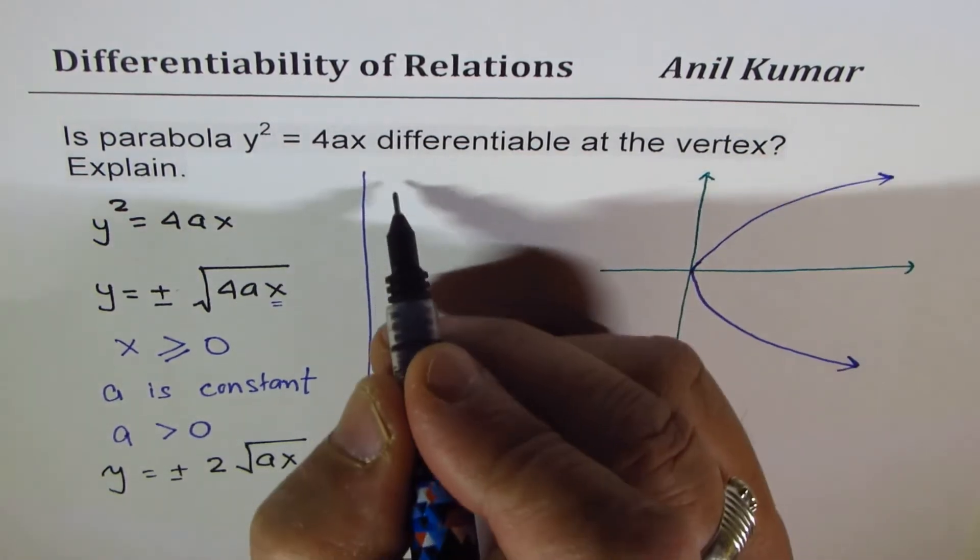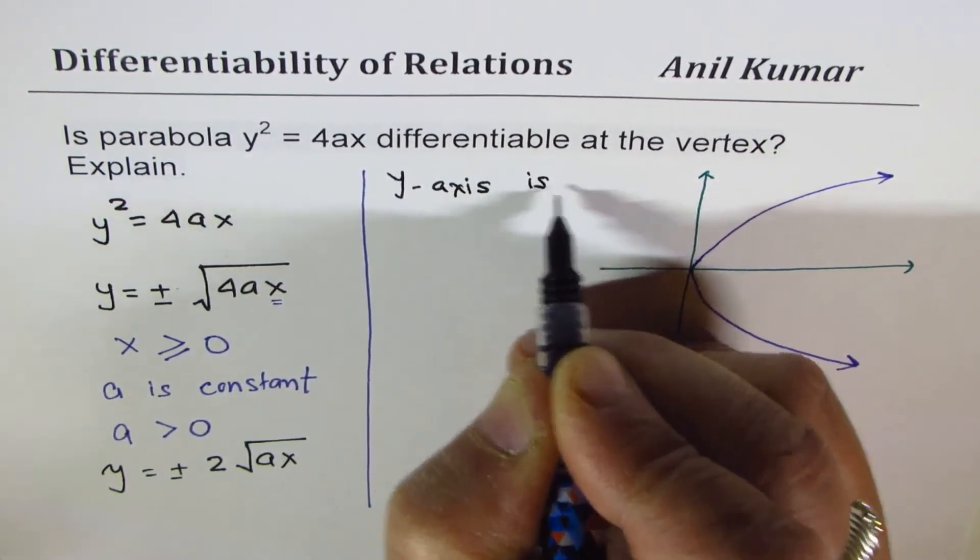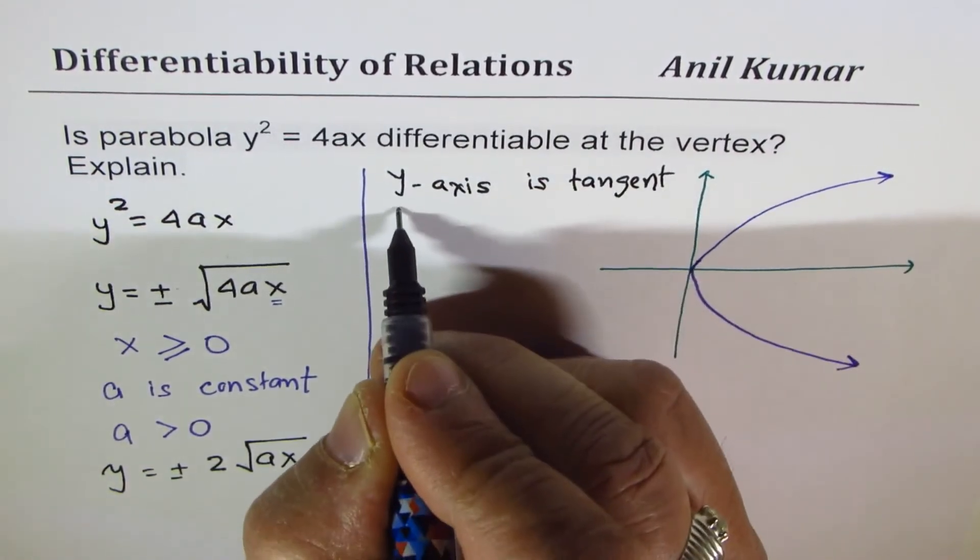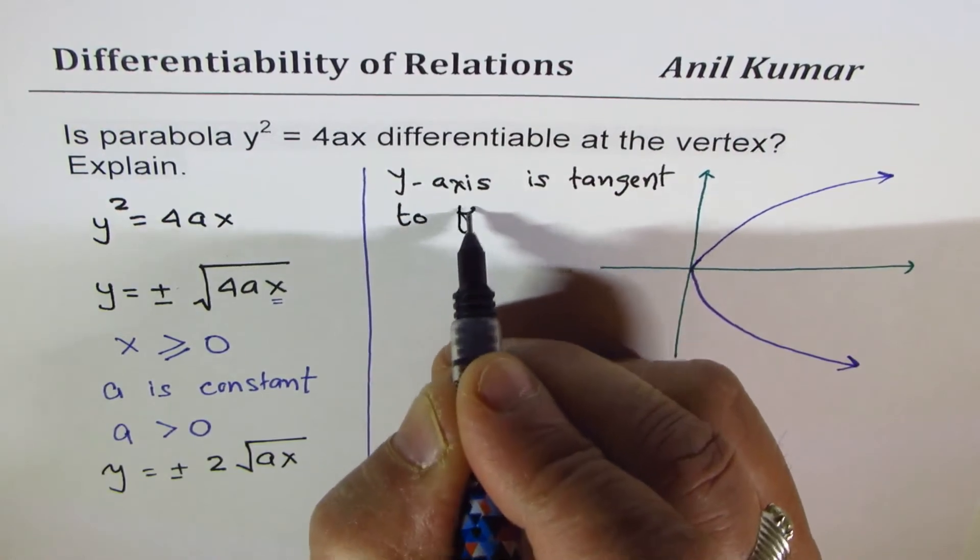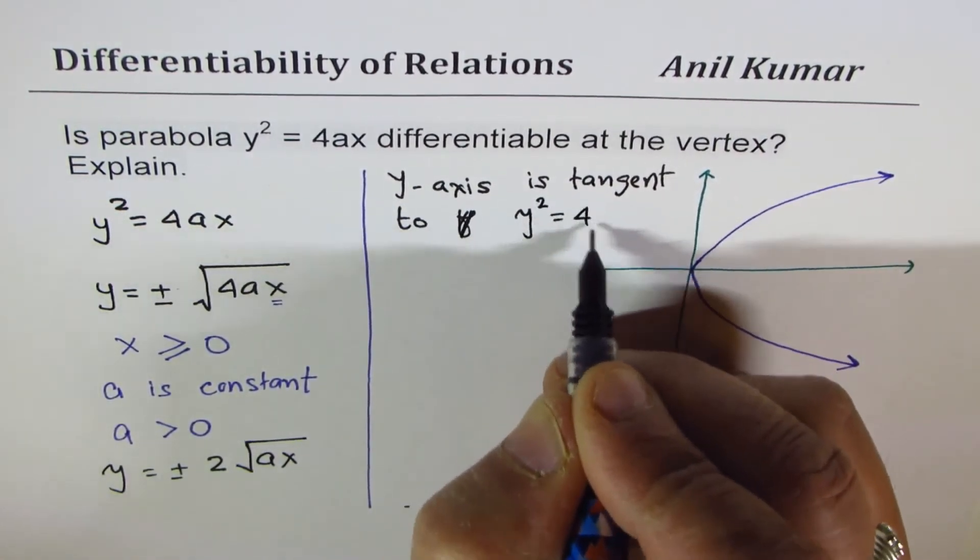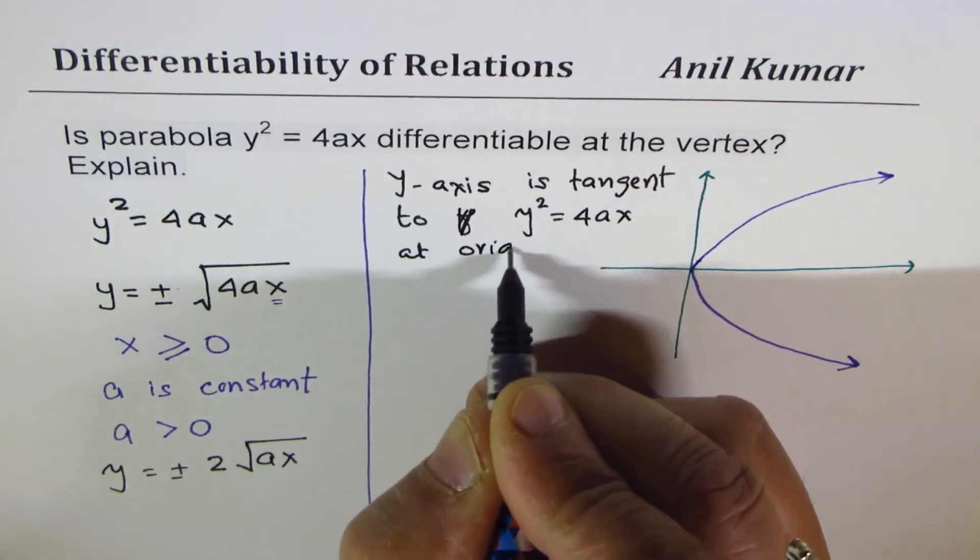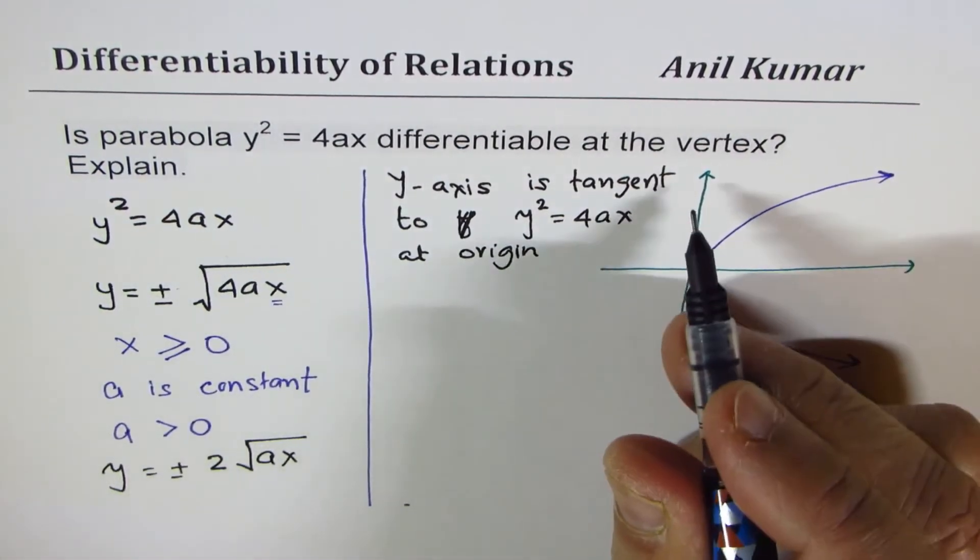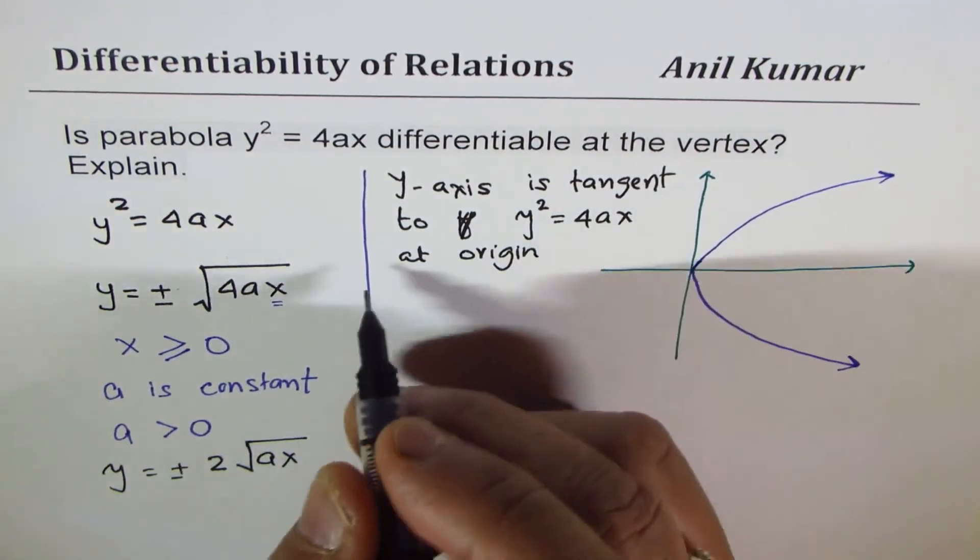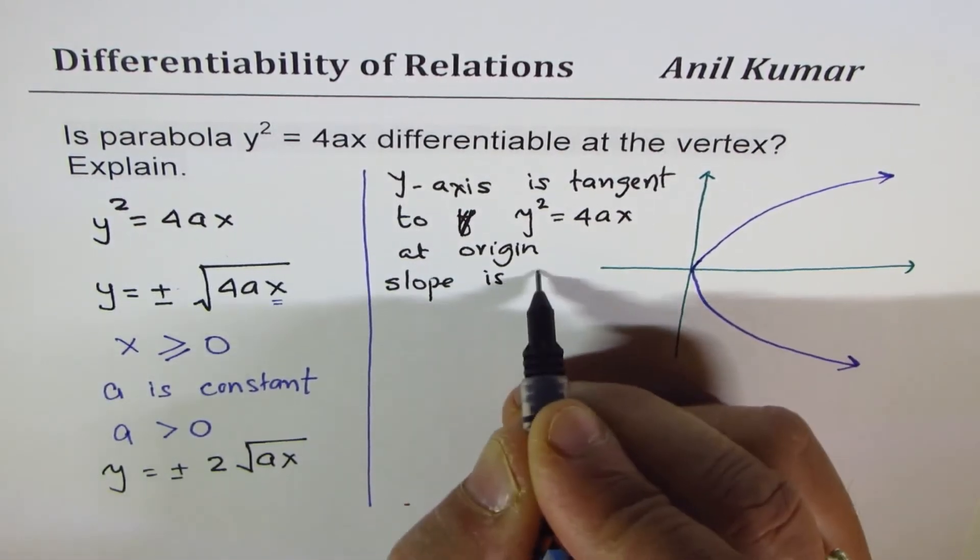As you can see from here, the y-axis is tangent to y² = 4ax at the origin. Now what is the slope of this tangent line? It is undefined.